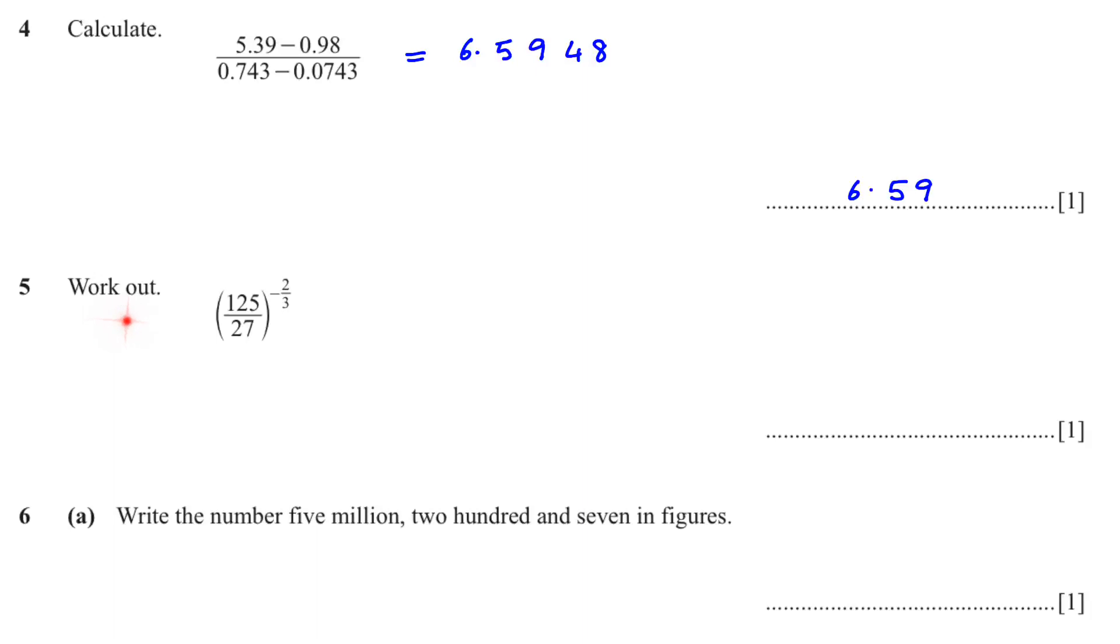Question number 5, work out. So we have been given a number in a bracket, two numbers in a bracket and the exponent power is negative. Whenever you have a negative exponent power, the numbers inside the bracket, you flip it over. So make the denominator as the numerator and the numerator as the denominator like this and then your power will be positive 2 over 3. Put this in the calculator and your answer is 9 over 25.